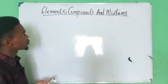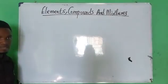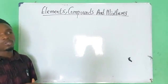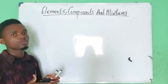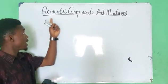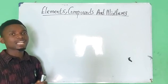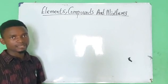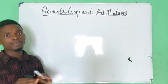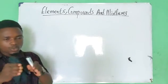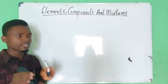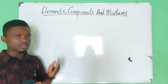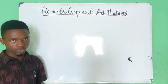Now the question is: what are elements? Elements are entities that cannot be split up or divided into several forms. They exist all by themselves — they cannot be split into two or more entities; they are just there.